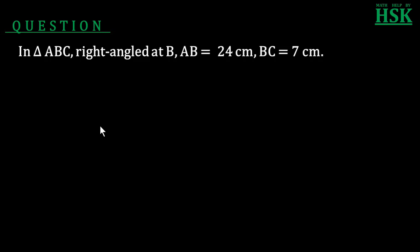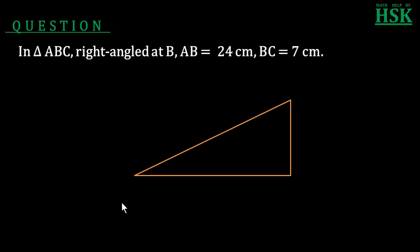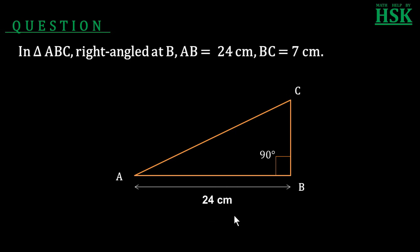The question is: in triangle ABC, right angle at B, AB is equal to 24 centimeters and BC is equal to 7 centimeters. According to the question, there is a triangle ABC, right angled at B, so angle B is 90 degrees. AB is equal to 24 centimeters and BC is equal to 7 centimeters.